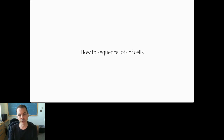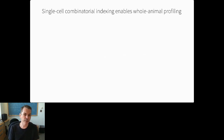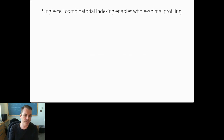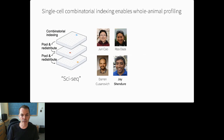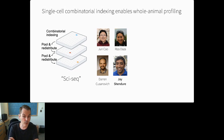One challenge with single-cell sequencing is physically isolating cells from one another before making libraries. You can do this in tiny capillaries or droplets, but ultimately it becomes a bottleneck. As part of a multi-year collaboration with Jay Shendure's lab, we've worked on a technique called combinatorial cellular indexing, or SciSeq for short, which allows us to sequence the transcriptomes of millions of cells in one experiment very inexpensively. It labels the molecular content of each cell through successive rounds of splitting and pooling without ever having to physically isolate them as single cells.